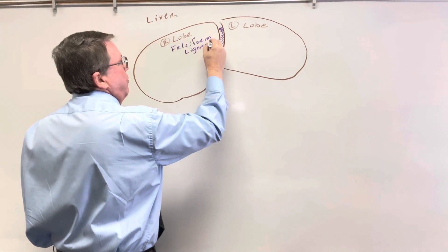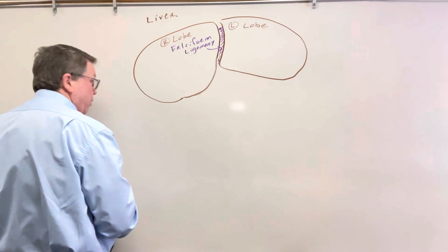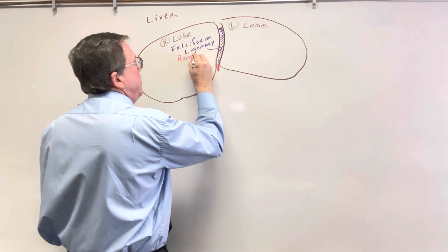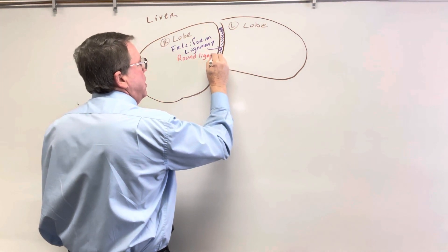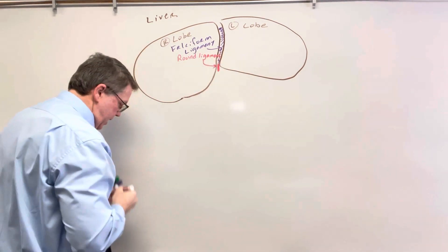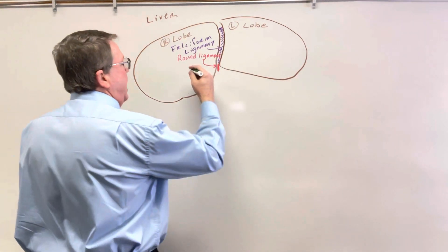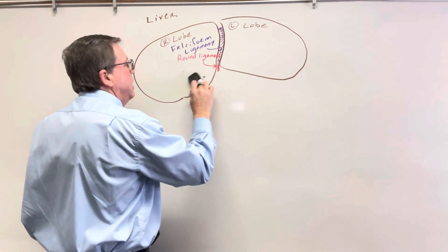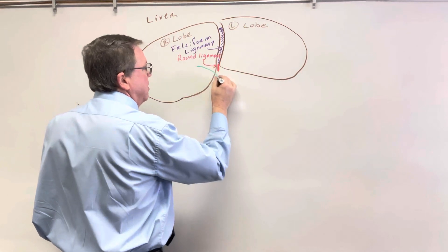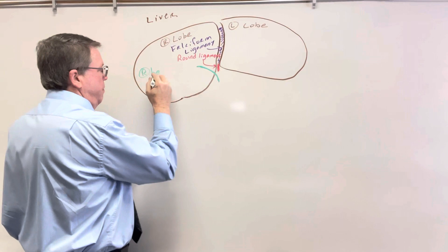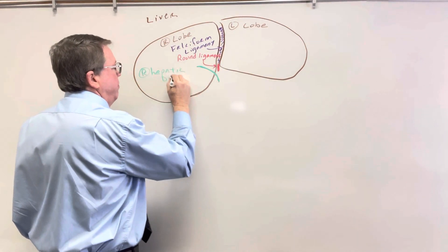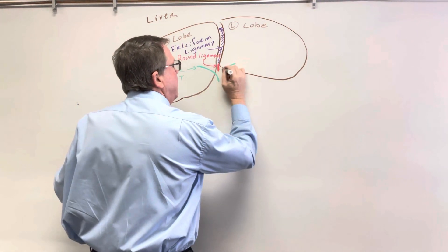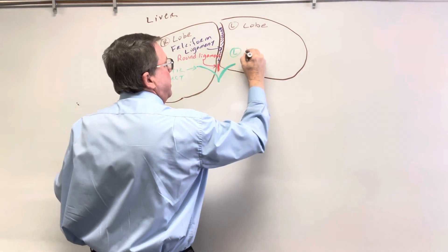And then attached to the falciform ligament, we are going to have something called the round ligament, which is going to be basically attached onto the bottom of this. So this is going to be our round ligament. Now let's talk about how bile travels. The liver is going to make bile, and in the right lobe I'm going to have something we call the right hepatic duct. And then in the left lobe, we're going to have the left hepatic duct.